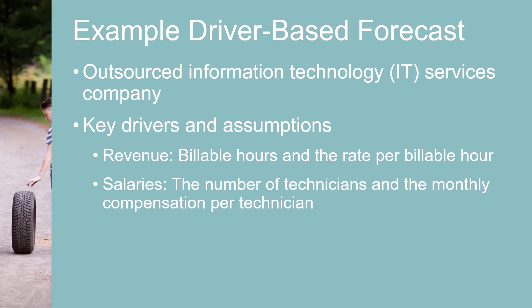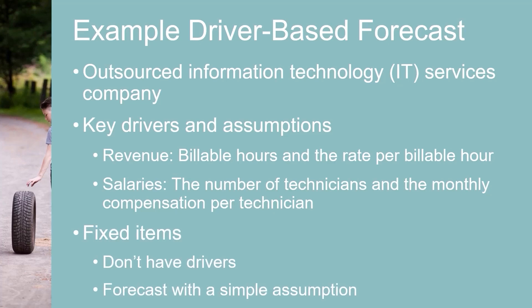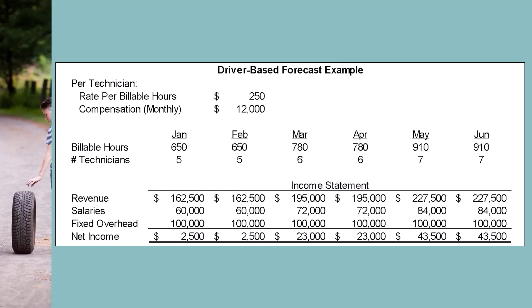Managers have some control over these drivers and may make trade-offs between them. For example, they do a promotion that lowers the price per hour but increases the billable hours to improve profits. Items that are fixed — for example, fixed overhead — don't have drivers. They are forecast at past averages, most recent amounts, or some other simple assumption. Here's a simple forecast for this company. Two drivers that apply to each technician are listed at the top, and these amounts apply to all periods.